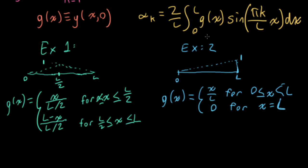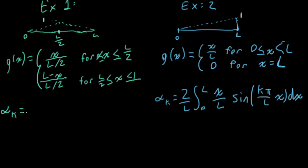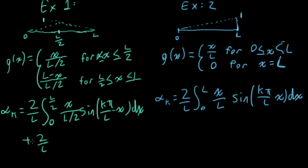All right, so now we need to take our g's and plug them into this expression up here. So let me scroll down a little bit to make some room. So on the right, I'll write alpha k is equal to 2 over l integral from 0 to l x over l times sine k pi over l x dx. And that's pretty straightforward. And then on the left, I have to split this into two parts. So I'll have 2 over l integral from 0 to l over 2, this x over l over 2, my happy sine function here, plus 2 over l integral from l over 2 to l. And then in here, I have l minus x over l over 2, sine k pi over l x dx.